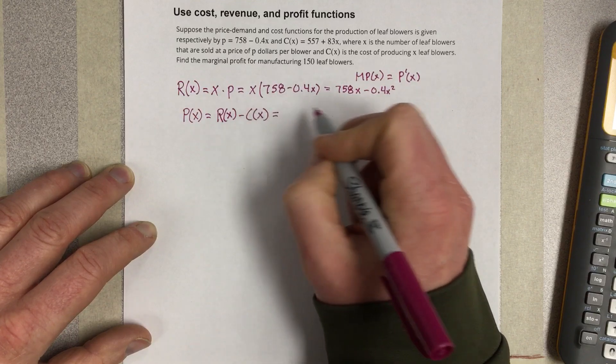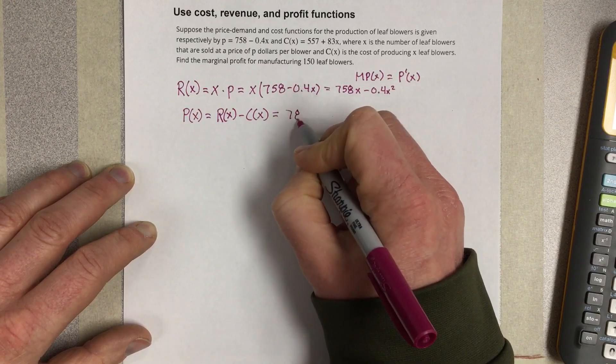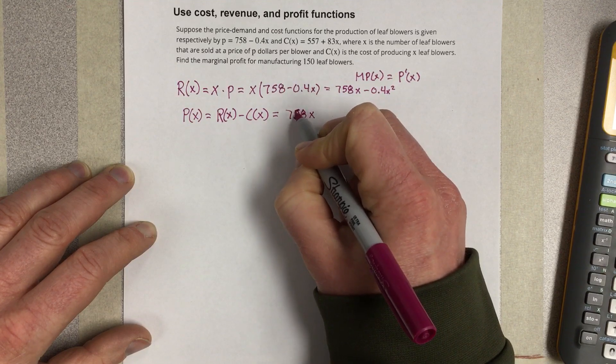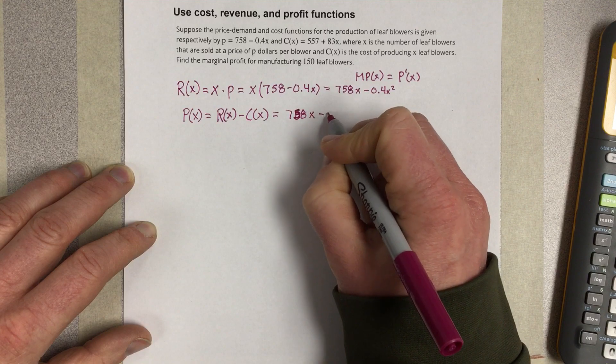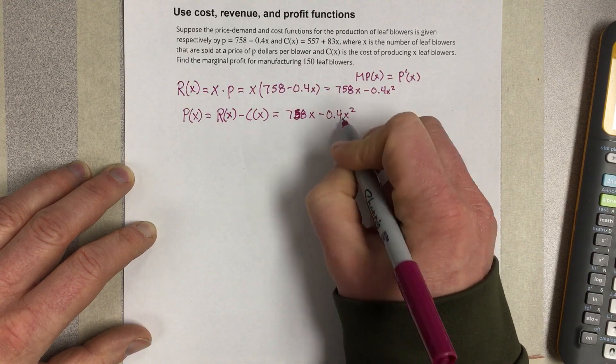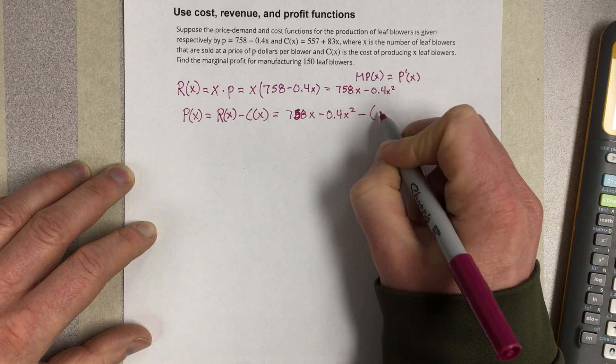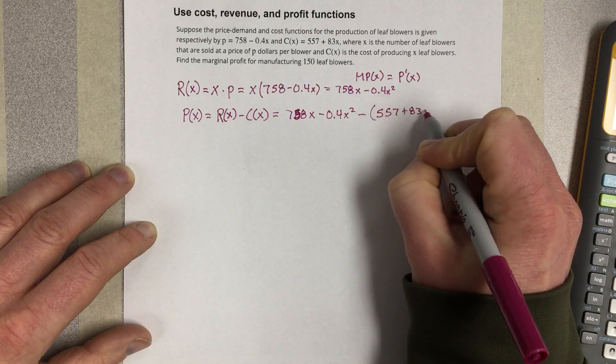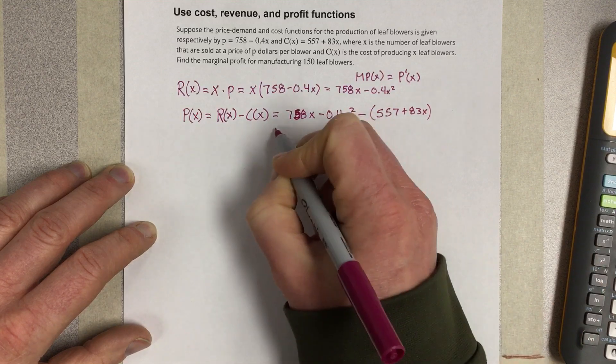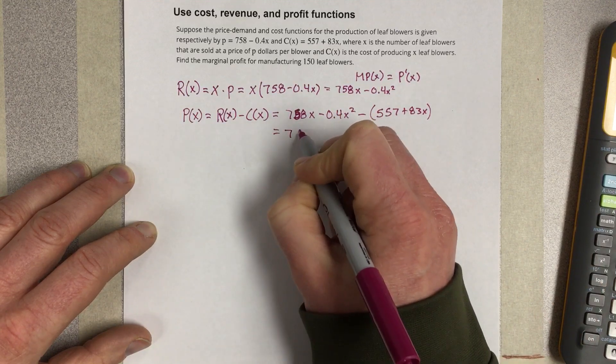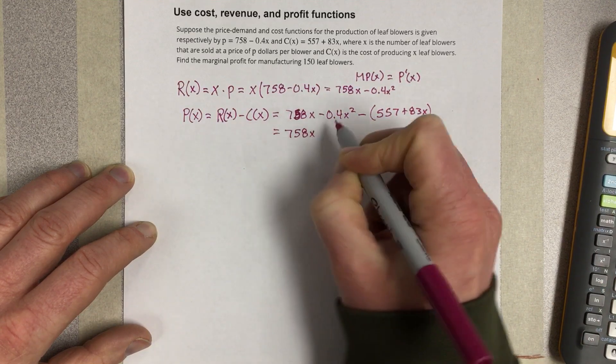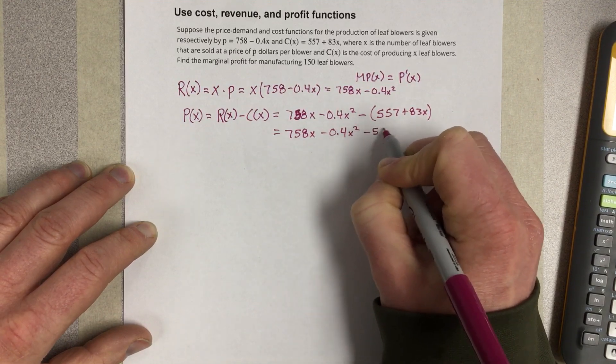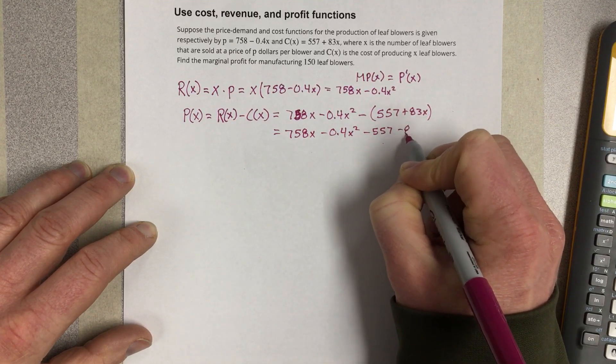We're taking our revenue, which is 758x, and we're subtracting out 0.4x squared. So that's our revenue equation minus our cost equation, which is 557 plus 83x. If we distribute there, we get 758x minus 0.4x squared minus 557 minus 83x.